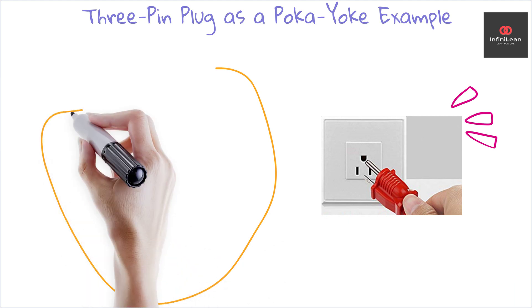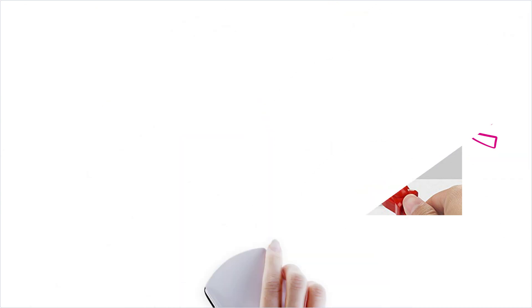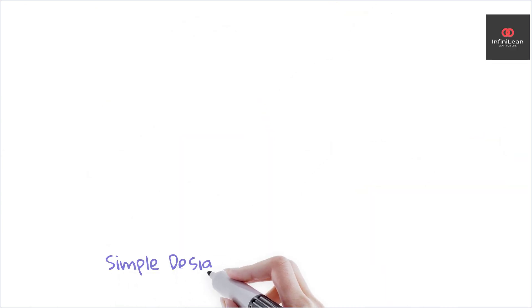Another relatable example is the camera memory card slot, which only allows insertion in one direction. These instances exemplify how simple design changes can effectively prevent errors.